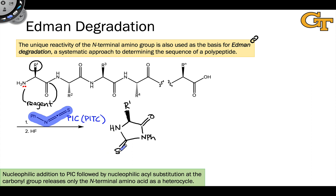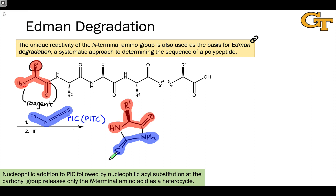Within this heterocyclic product, we can see the elements of PIC, which I've highlighted in blue right here — the sulfur atom, central carbon, nitrogen, and phenyl ring — and we can also see the elements of the amino acid, highlighted in red. The entire N-terminal amino acid becomes incorporated into this heterocycle. Two key bonds are formed: a bond via donation of an electron pair from the amino nitrogen of the amino acid to the central carbon of PIC through nucleophilic addition, and a bond formed via donation of an electron pair from the nitrogen in PIC back to the carbonyl carbon of the N-terminal amino acid through nucleophilic acyl substitution.